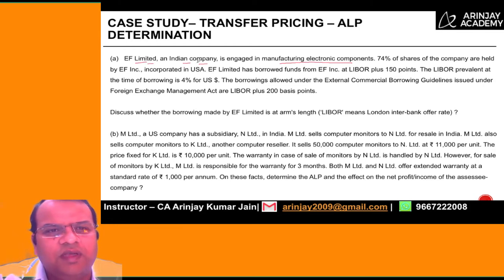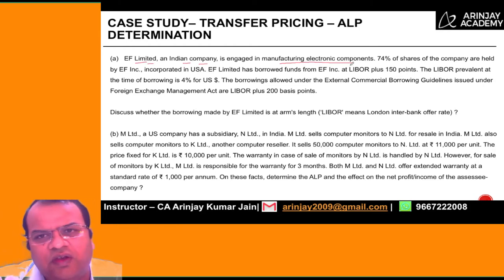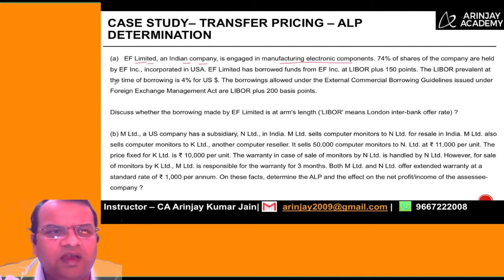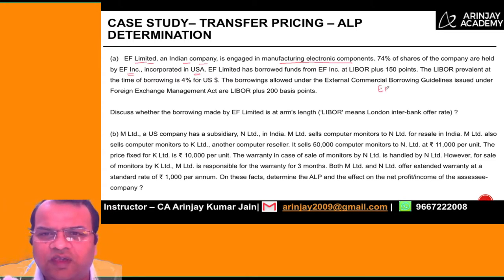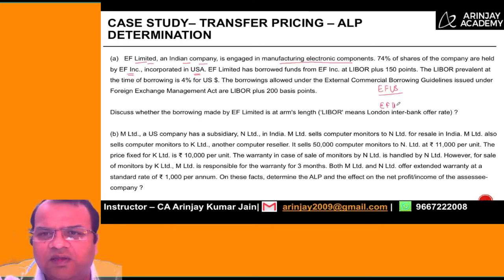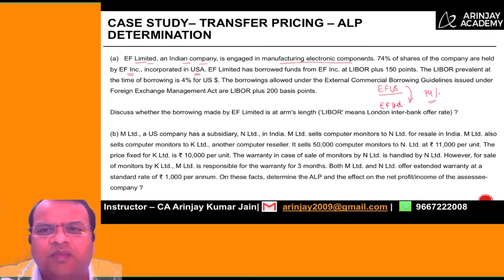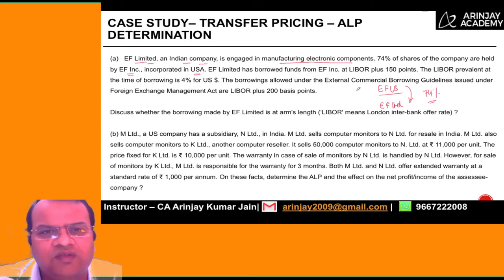EF Limited, an Indian company, is engaged in manufacturing electric components. 74% of shares of the company are held by EF Inc., incorporated in US. So you have EF US which owns 75% of EF Limited India. Now because the shareholding is more than 26%, the two are associated enterprises and any transaction between them would be covered under transfer pricing.